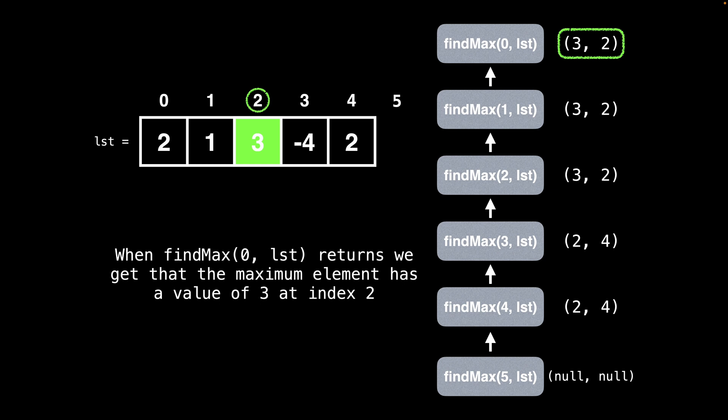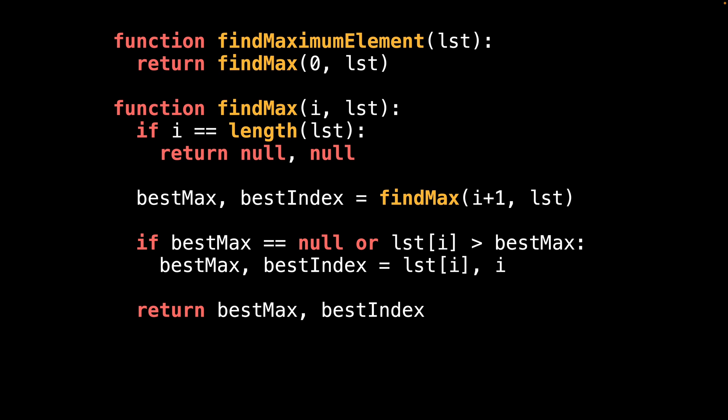So the process of returning multiple values is really the same as returning a single value, except that there are more variables and juggling of variables going on. Let's quickly take a look at some pseudocode on how to find the maximum element and its index. The first thing we do is declare a function called find maximum element, which delegates the work of finding the maximum value and its index to the find max function.